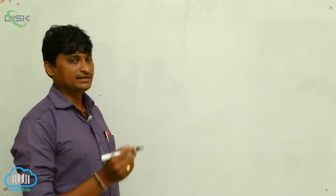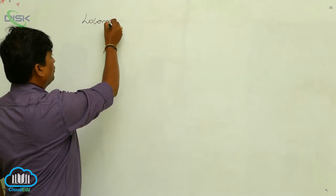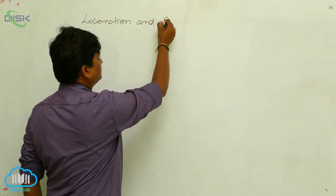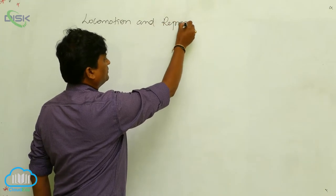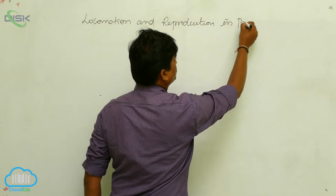The fifth chapter of Zoology, first year, is Locomotion and Reproduction in Protozoa. Locomotion and Reproduction. Reproduction in Protozoa.